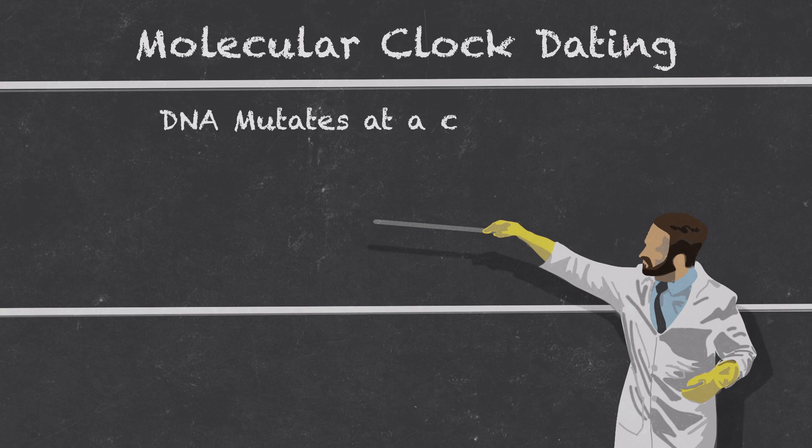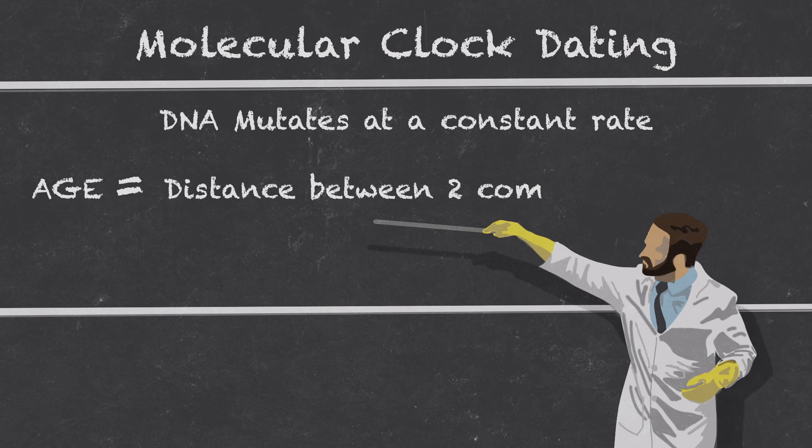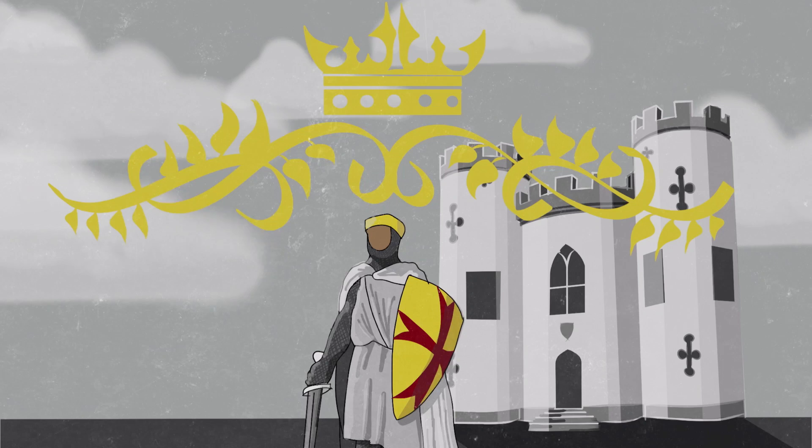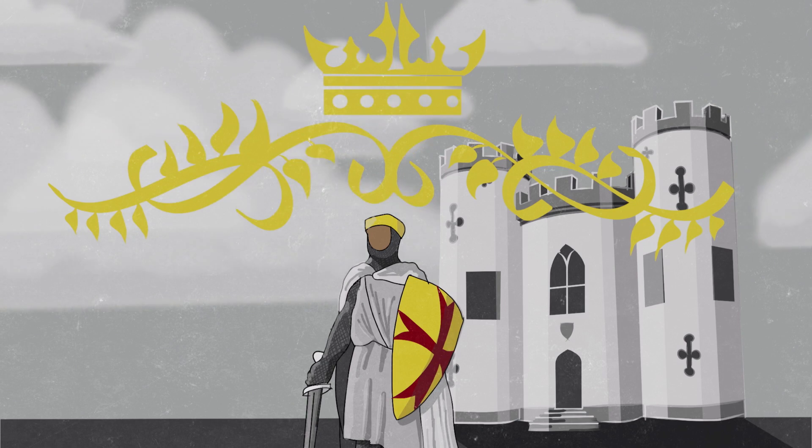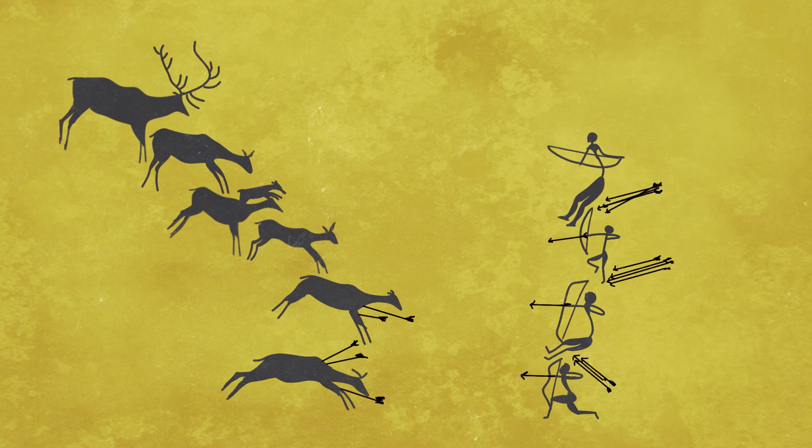Turns out, we can calculate that. By looking at the rate of mutations in a virus, one can figure out when a virus was born. That puts Lassa virus at about 1,000 years old, and Ebola at a ripe 10,000 years old.